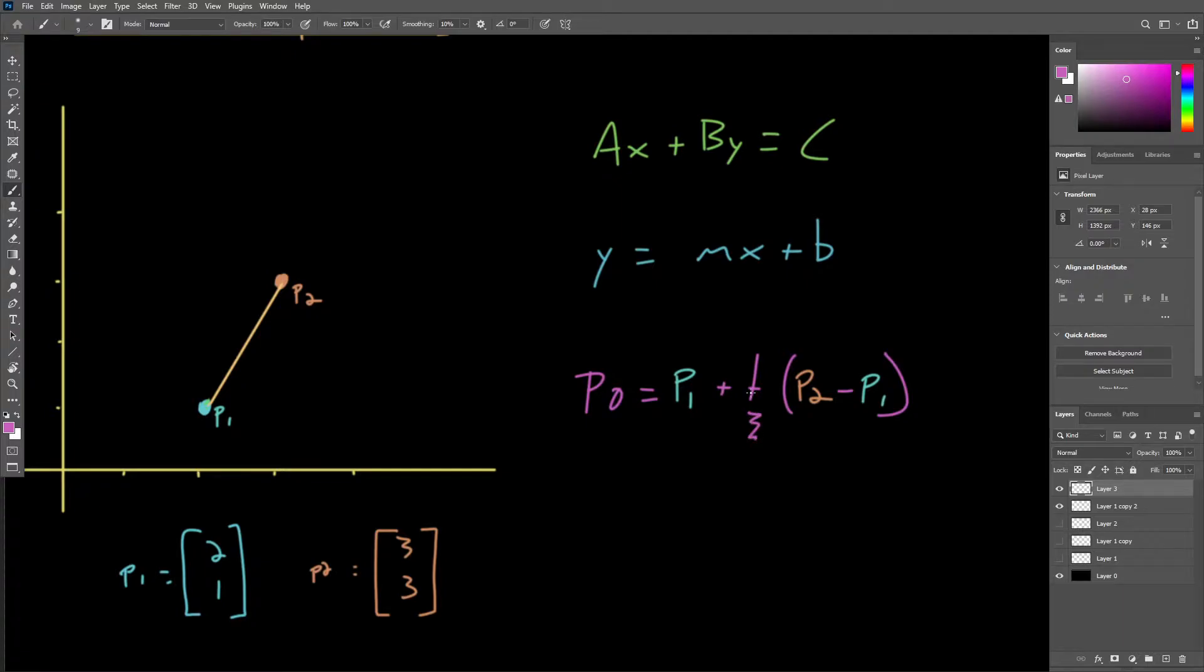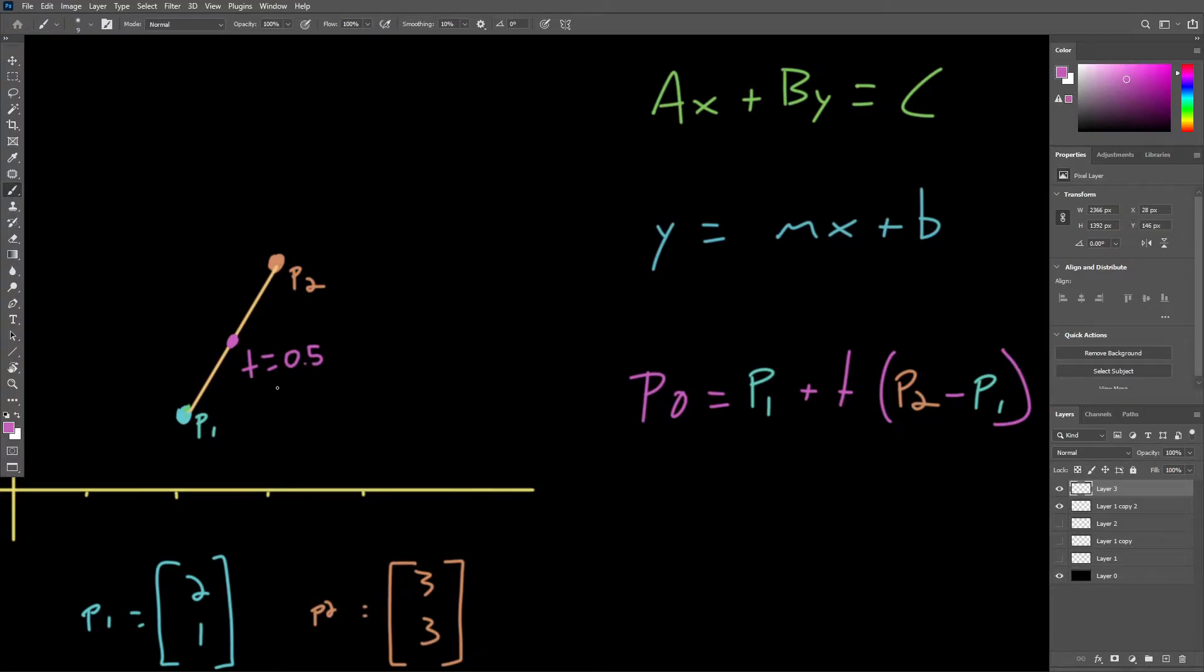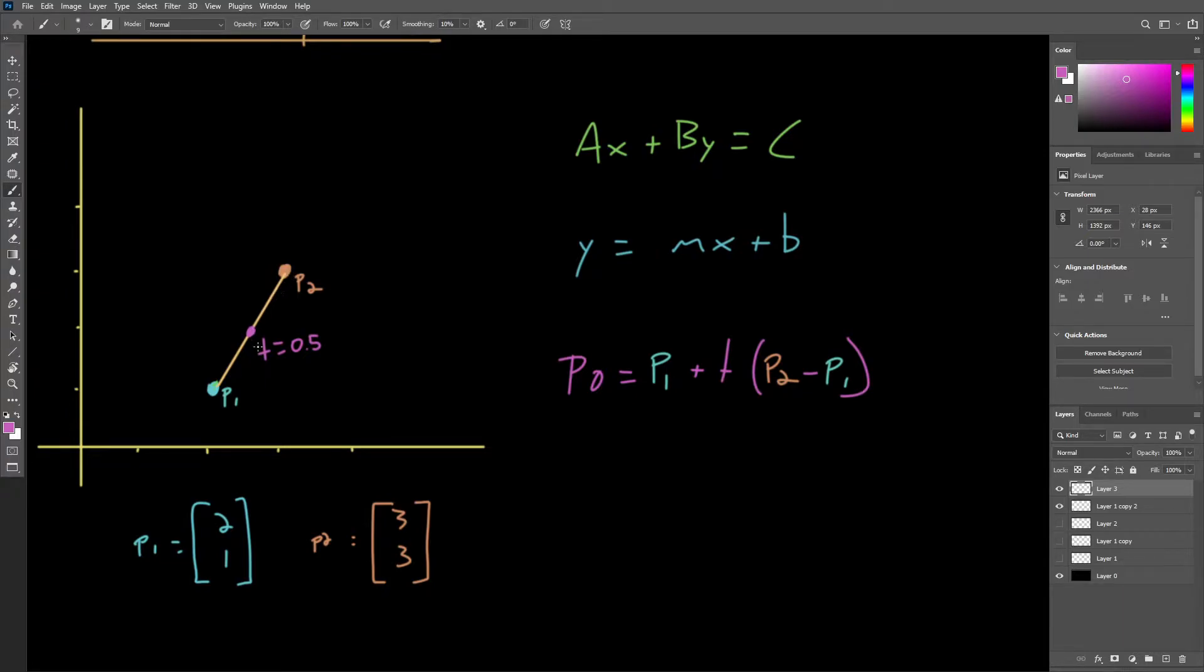The variable T offers unique functionality in that it represents the distance between P1 and P2 that P0 actually lies on. And it represents this distance as a value between 0 and 1. So for a T value of 0.5,